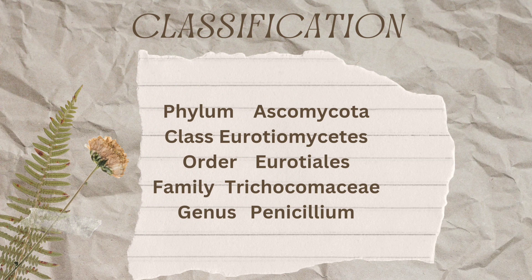Next, we will talk about the classification. The phylum is Ascomycota. The class is Eurotiomycetes. The order is Eurotiales. The family is Trichocomaceae, and the genus is Penicillium. So this is all about the classification of Penicillium.